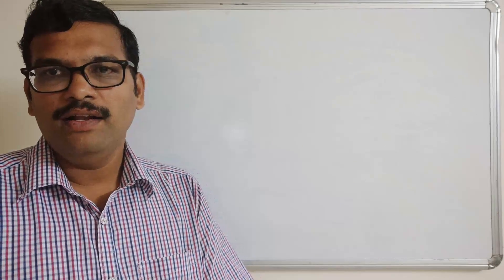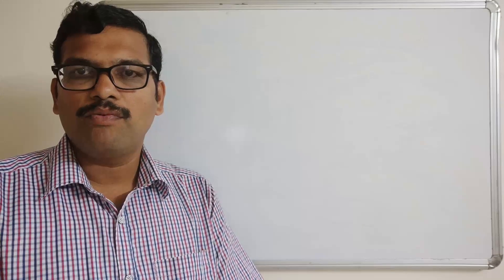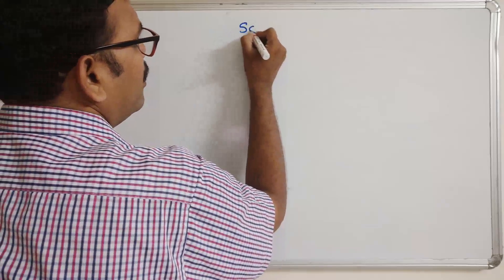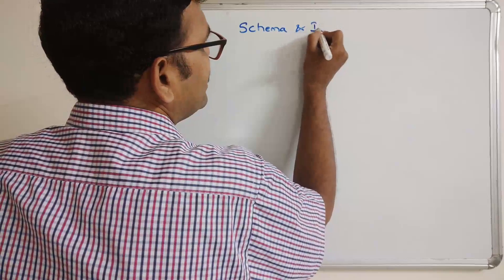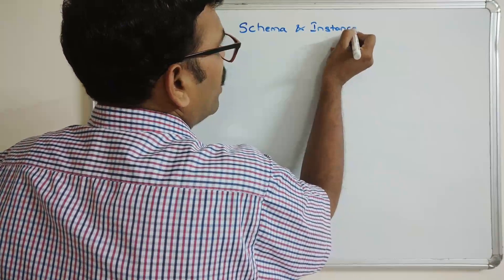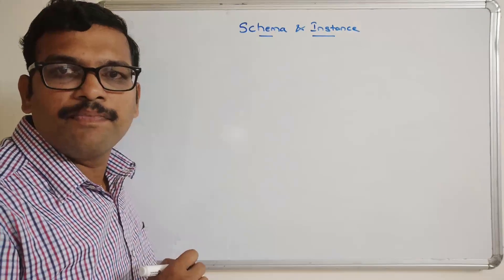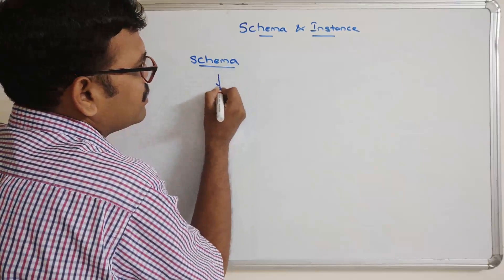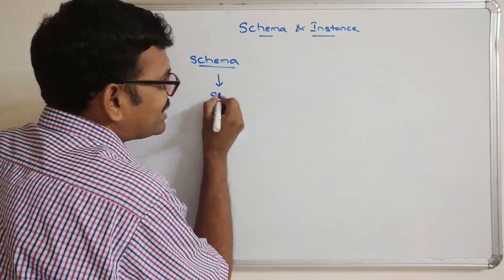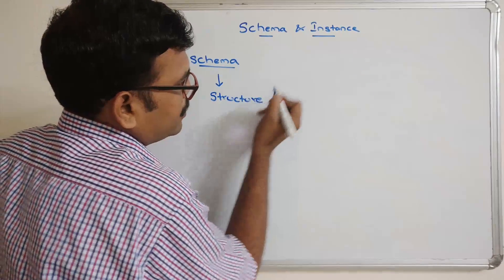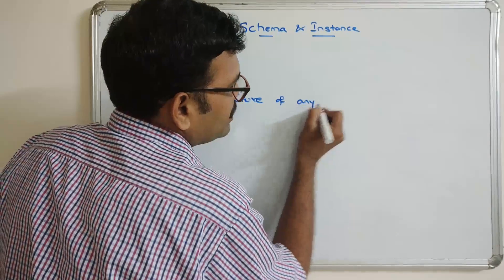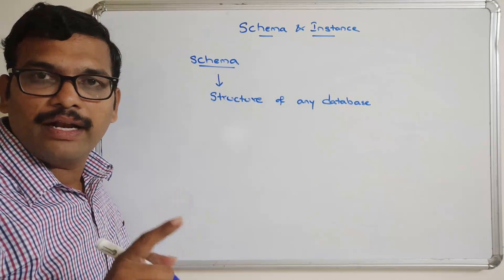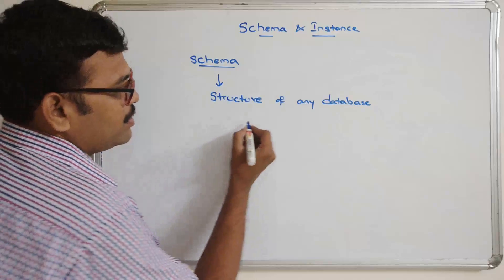Hello friends, welcome back to our channel. In today's session we'll discuss one more topic in DBMS: schema and instance. The schema in a database is treated as a structure of any database — it is represented as a schema. It's not the data, it's a structure. Consider a student table.